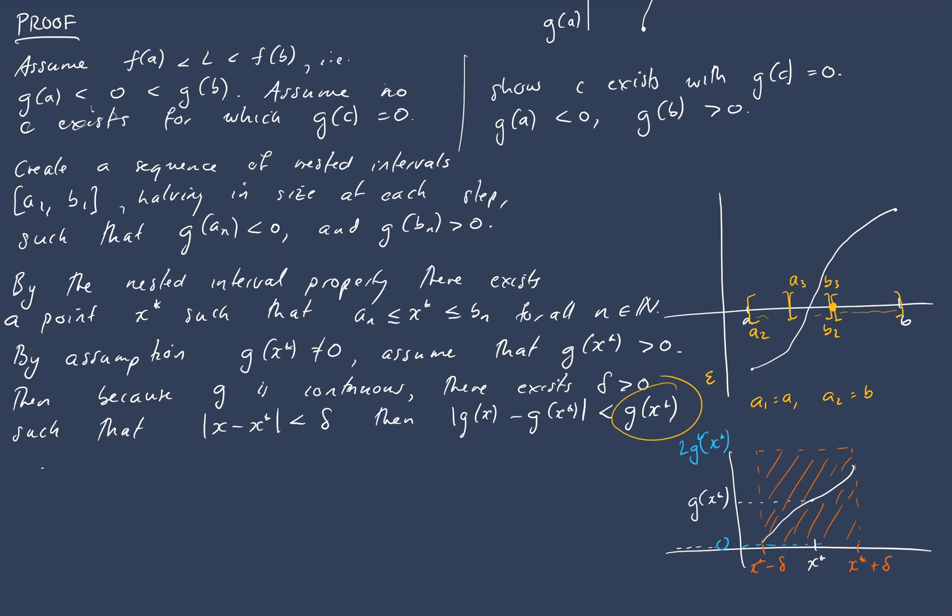So this g(x*) here is filling the role that epsilon normally fills in our statements. And this implies in particular that g(x) is greater than 0.